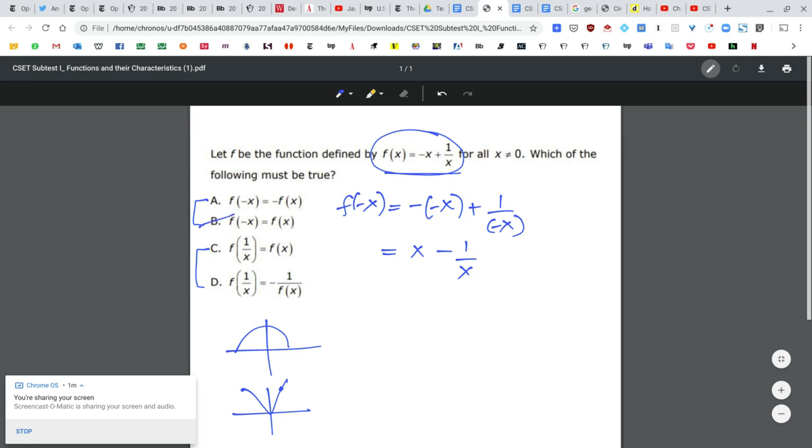Choice A says it's the same as negative f of x. So I'll just evaluate the right-hand side, which is negative f of x. So it's really negative of the function they gave me. It turns positive x minus 1 over x. That is the same.